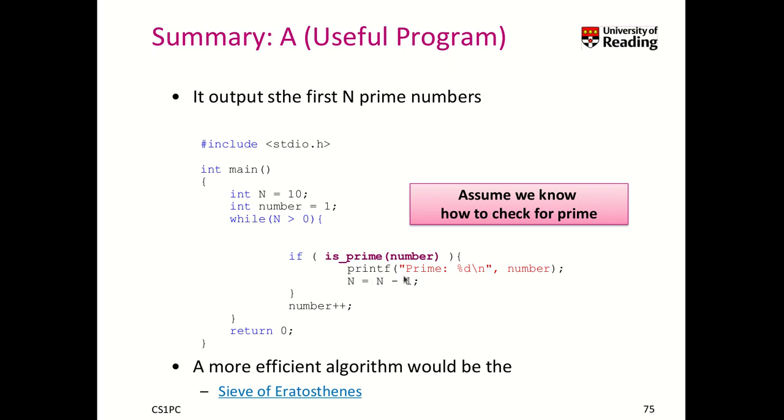But every time we find a prime, we decrement N by 1. So that's why we print, in fact, 10 prime numbers. There are more efficient algorithms, like the Sieve of Eratosthenes, which we actually discussed in the exercises.